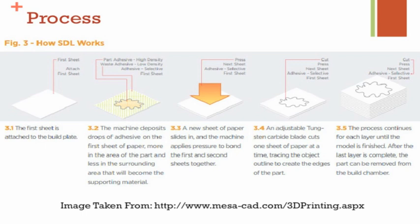For the first learning outcome, we'll talk about the process of LOM. There are five steps. First, a sheet of paper or material is placed onto the build plate — there is some glue on the build plate to attach the first sheet. Second, glue is applied: more glue within the cross-section of the part and less glue on the outside. Third, a new sheet is placed on top of the previous sheet, and a high-pressure press bonds the two sheets together.